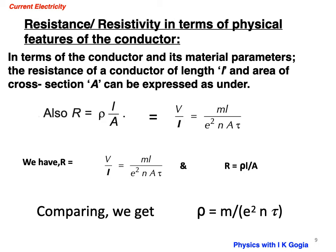So rho depends on N and tau. See, M is mass of electrons, constant. E is electron charge, again a constant. So two factors which affect the resistivity of a material are N and tau. So inversely related to N as well as to tau.